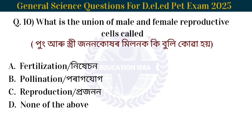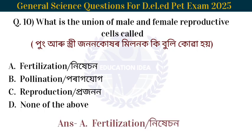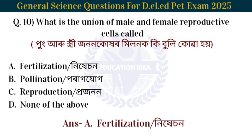Next question: What is the union of male and female reproductive cells called? The union of male and female reproductive cells is called fertilization.